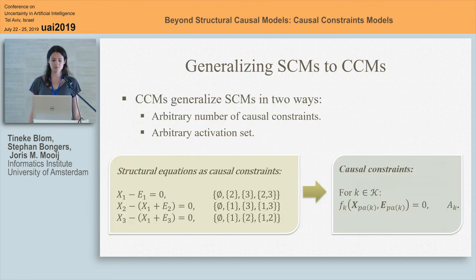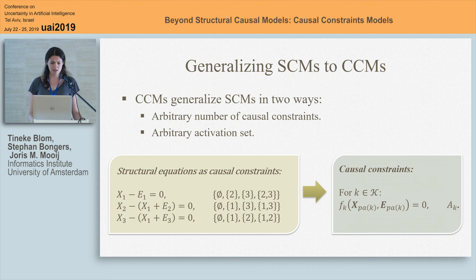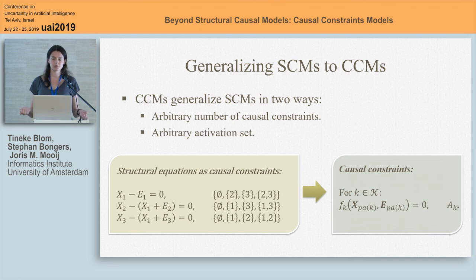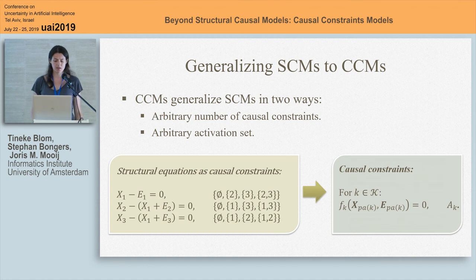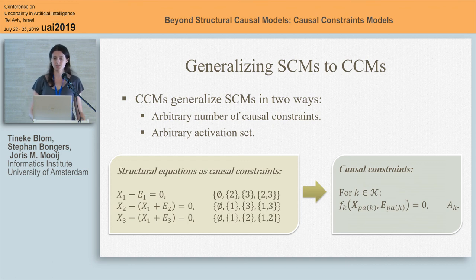The idea of causal constraints models is that we generalize this. We allow for an arbitrary number of causal constraints, and also for an arbitrary activation set. So instead of having this very particular form of constraints on the solution space and the set of interventions under which they are active, we can write the equations and when they are active in a more general way. The technical details can be found in the paper; I want to focus on why we need such a generalization in the first place.